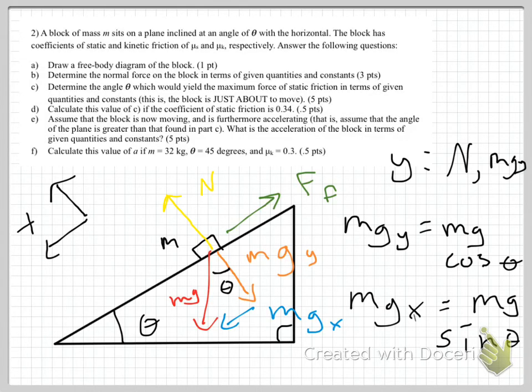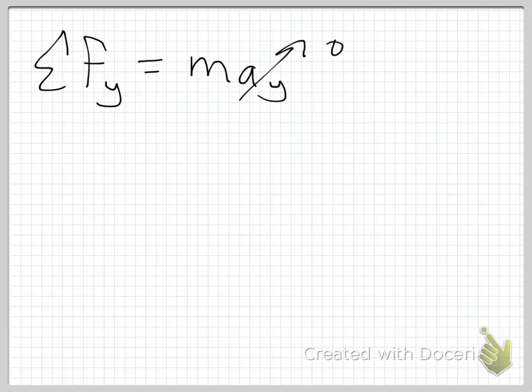So let me go to a new page and actually show you the process. Sum of the forces in the y direction are equal to MA sub Y. Now I'm going to unpack those. Well, first I'm going to say, what is A sub Y? Well, is this block moving up or down through the plane, up off the plane or down through the plane? And no, it's not. So I can safely say that the acceleration in the y direction is zero, which makes this nice.